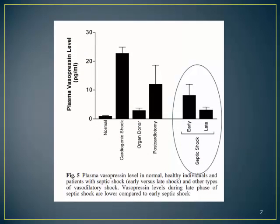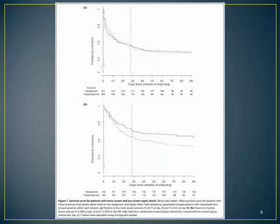The theory behind vasopressin working better in more severe septic shock — which the VAS trial was built around — is that there is a relative deficiency of vasopressin in late-stage septic shock. Early in septic shock you have very high vasopressin levels, then as sepsis progresses the levels decline. However, this physiology is not supported by the study; it actually goes quite opposite to the physiological rationale. The study found that the more severe the septic shock, the less evidence of vasopressin benefit — a statistically significant finding that contradicts the underlying physiology.